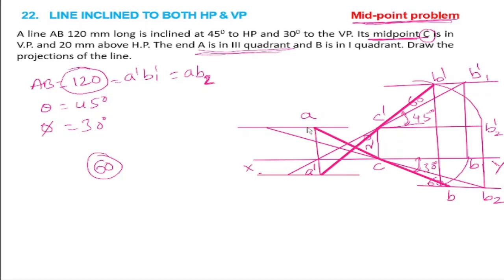We can observe in the top view a line A-B with C as the center, and in the front view A' dash B' with C' as the center. In midpoint problems, they give the reference of the midpoint with respect to the horizontal plane and vertical plane. This is the way we solve double inclination midpoint problems.